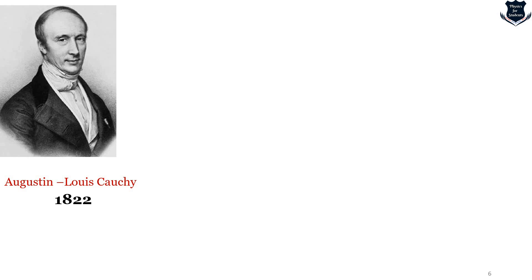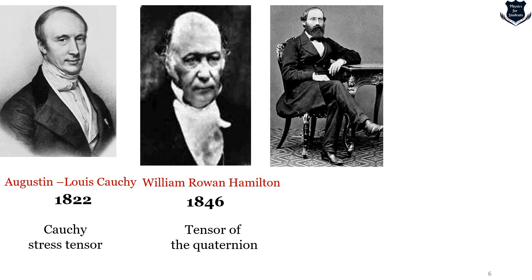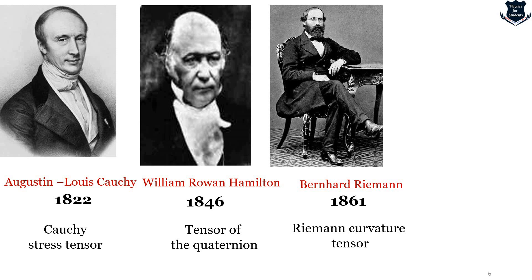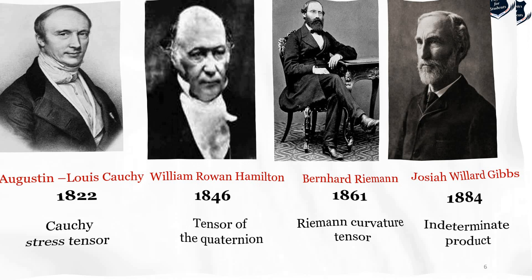Going back to the history of tensors: it started with Augustin-Louis Cauchy who used the Cauchy stress tensor. The term was first coined by William Rowan Hamilton using quaternions. Tensors were widely used by the great mathematician Bernhard Riemann on the Riemann curvature tensor, and also used by Josiah Willard Gibbs in 1884, which he called an indeterminate product. There are further mathematicians and physicists but covering tensors' full history would take a long time — this is just a quick overview.